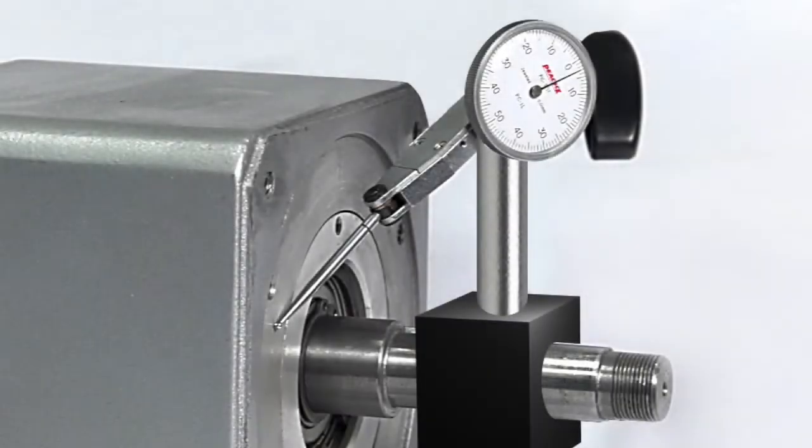The next thing to check is the pilot and bolt circle. These should be concentric to the shaft within six-thousandths total indicator runout.